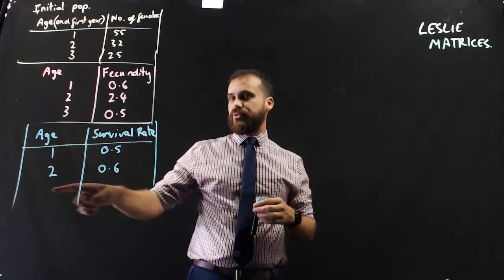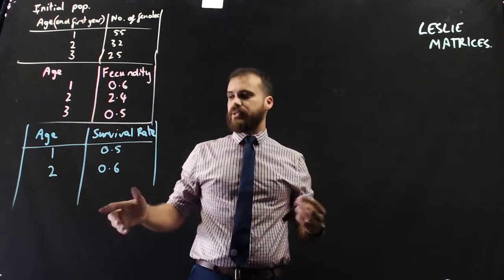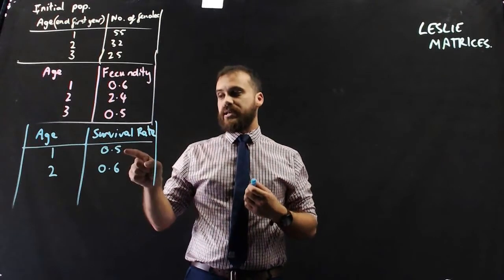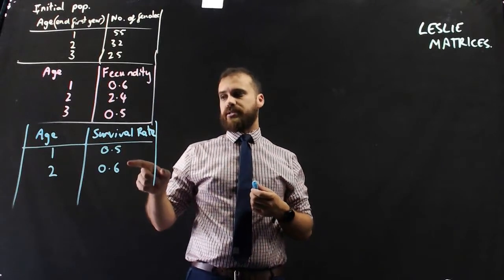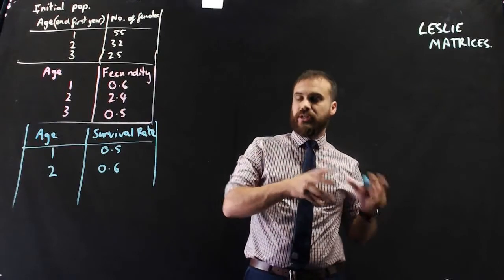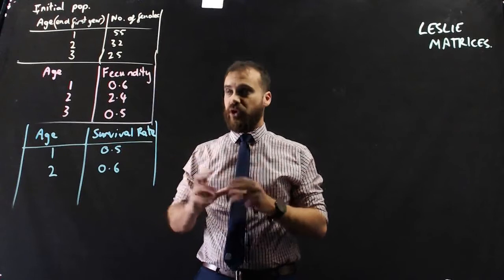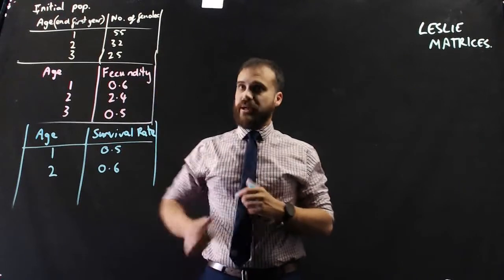Now you might be wondering where's the number for three-year-olds? None of them, zero. Important to remember that these are survival rates. So if you're told 80% perish, that means 20% survive. You need to make sure you're treating them as survival rates.